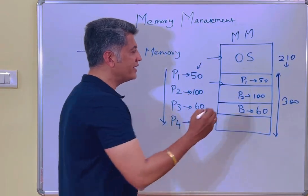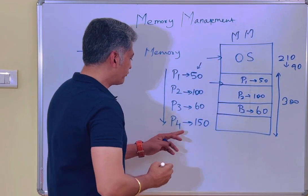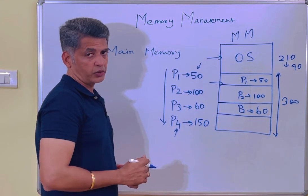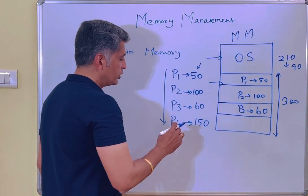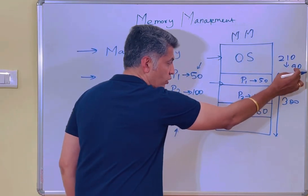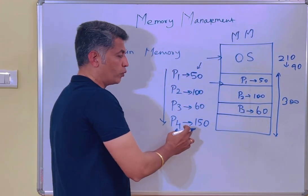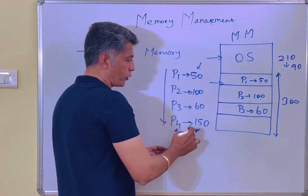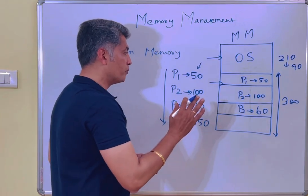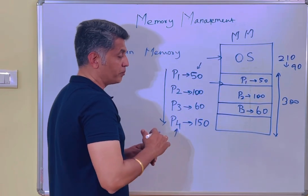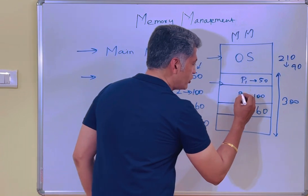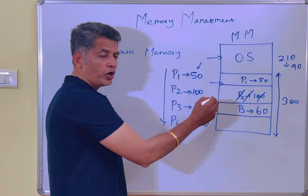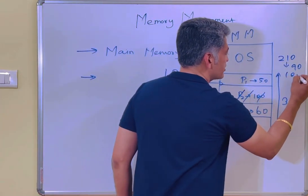The remaining is only 90 locations. But process 4 requires 150 locations — so this process cannot be allocated by the operating system at this point. Meanwhile, say process 2 completes its execution. Now 100 additional locations are freed up, so how much is free now?